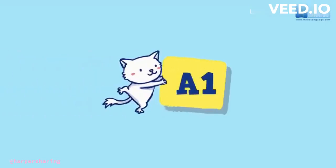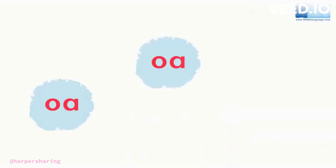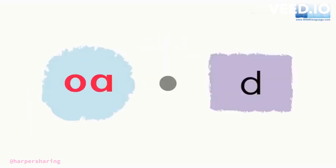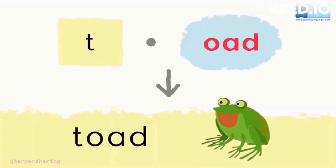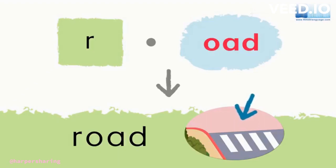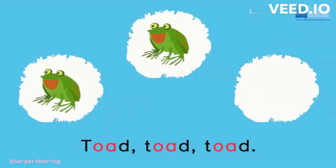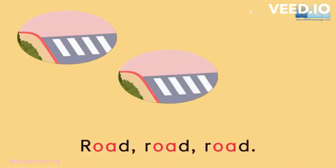A1. O-O-O. O-D, O-D. T-O-D, T-O-D. R-O-D, Road. Toad. Road.